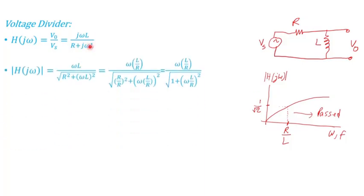Taking the magnitude of that transfer function, it becomes ωL divided by the square root of the quantity R² plus (ωL)². We can then divide both the numerator and denominator by R.